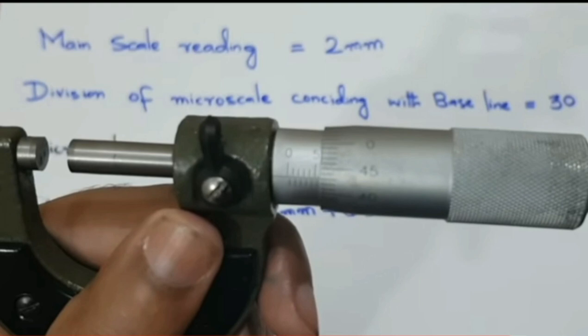For another example, we have to measure an object and the main scale reading is 5.5 mm. Then the vernier scale reading — we look carefully; the line on the circular scale that coincides with the main scale line is at 43. So the vernier scale reading is 43. We multiply by the least count and add the main scale reading to find the total reading of the object.